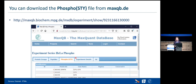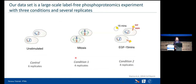Our dataset is a relatively large-scale, label-free phospho and phosphoproteomics experiment. The dataset we are going to analyze has three conditions. The first is a control sample where no enrichment was done. The second is mitosis, where we have a lot of phosphorylation events happening. The third is EGF (epidermal growth factor) stimulated, where some phosphorylation events occur. Please refer to the original paper for more details.